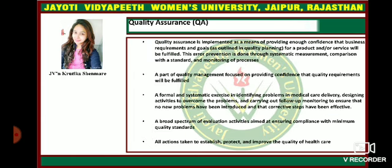Quality assurance is implemented as a means of providing enough confidence that business requirements and goals for a product or service will be fulfilled. This error prevention is done through systematic measurement, comparison to the standard, and monitoring of the process. A part of quality management focuses on providing confidence that quality requirements will be fulfilled. It is a formal and systematic exercise in identifying problems in care delivery, designing activities to overcome the problem, and carrying out follow-up monitoring to ensure corrective steps have been effective. It encompasses a broad spectrum of evaluation activities aimed at ensuring compliance with minimum quality standards, and all actions taken to establish, protect, and improve the quality of health care.